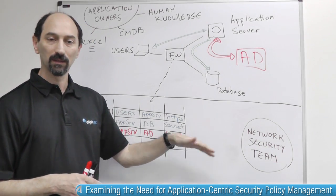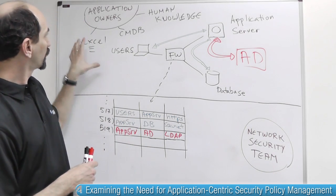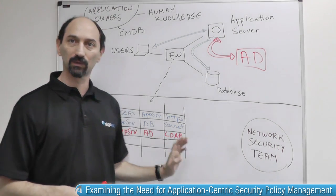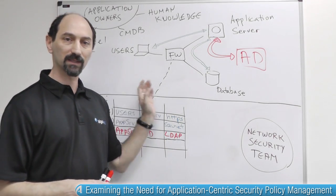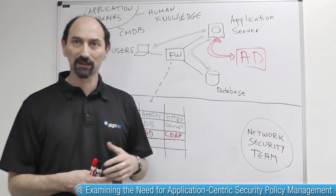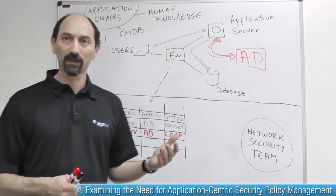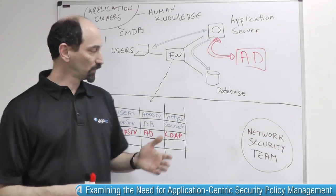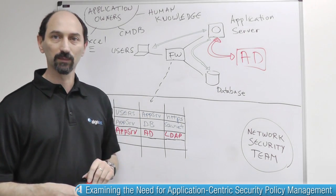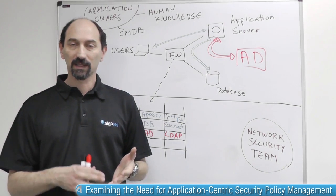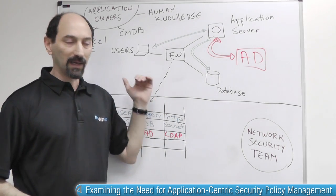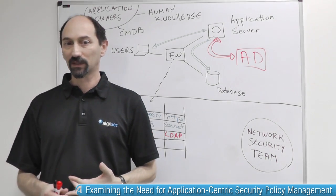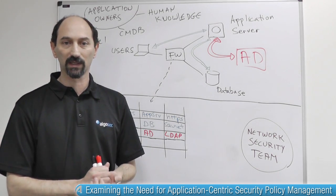But getting this done is a complex process. Just conveying the information correctly from the application owner's information systems to the network security team in a way that they can translate it into the firewall policy rules — that process can sometimes take days or even weeks until the two sides understand each other properly, find out what exactly needs to occur, and the right changes are made to the firewall policy. What we would like to do is to bridge the gap between these two separate teams so that with better processes and better mechanisms, they can streamline the process of making such changes so that it works more quickly, more efficiently, more accurately, and also without introducing any unnecessary risks to the organization by mistake.